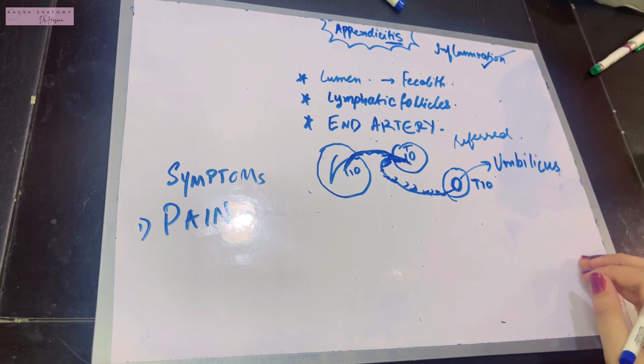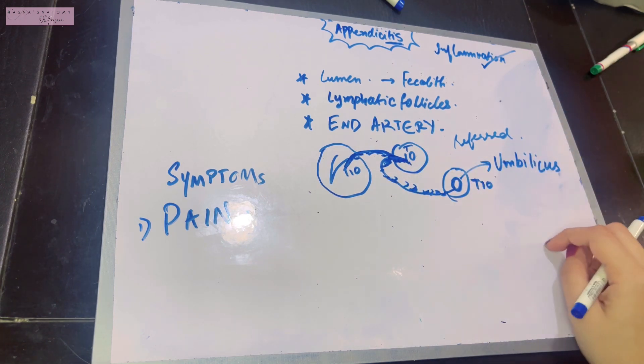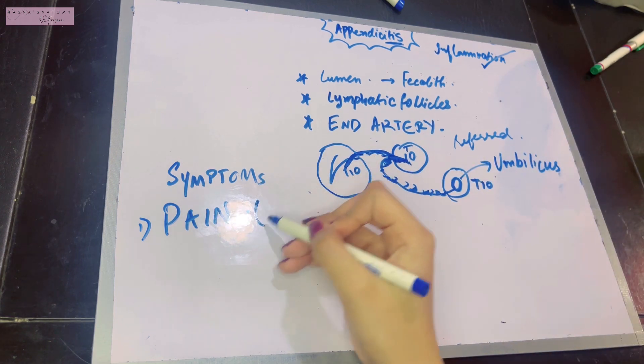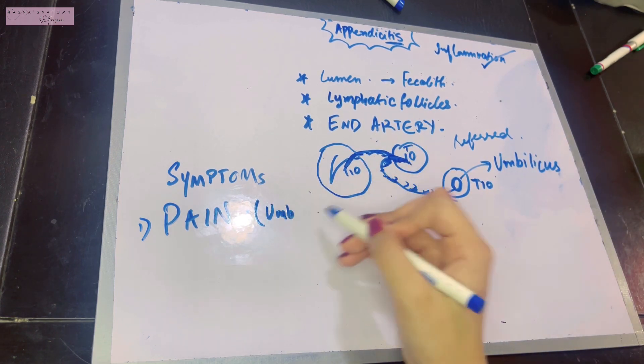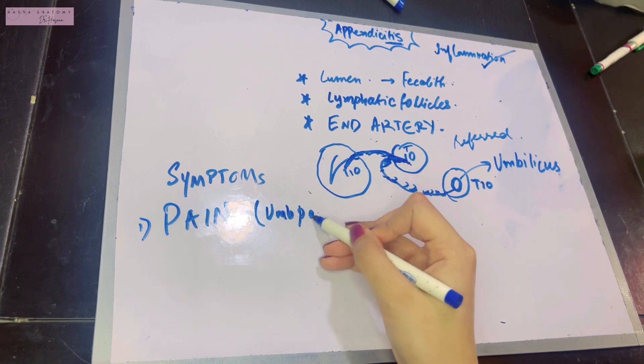The viscera are unable to detect pain, but somatic fibers can. So the skin around the umbilicus is going to feel pain if there is appendicitis. The initial symptoms of people suffering from appendicitis will be umbilical pain.